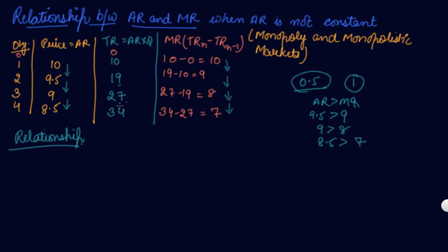From 10 it became 19, not 20. From 19 it became 27, not 38. So your total revenue from each additional unit sold is reducing because your price is reducing. Your MR is also declining, so your TR is increasing at a diminishing rate.